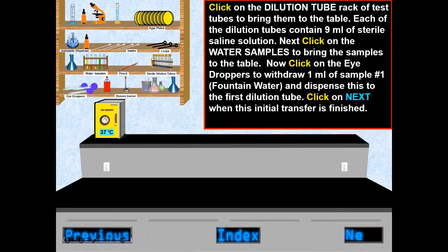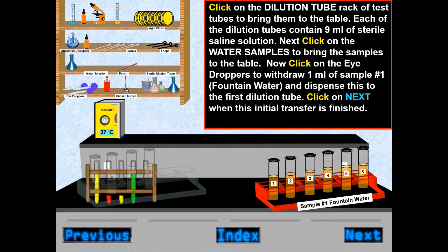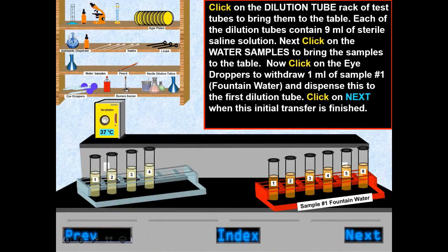First, the dilution tube rack of test tubes was prepared. Each of the dilution tubes contains 9 ml of sterile saline solution. The dilution tubes are used to decrease bacterial concentration with each conducted dilution.